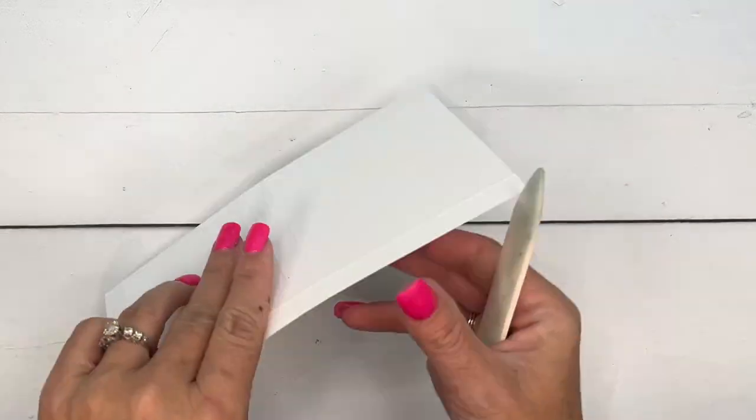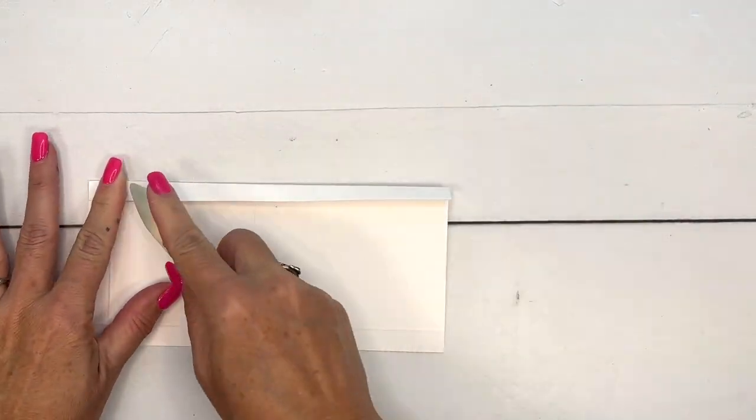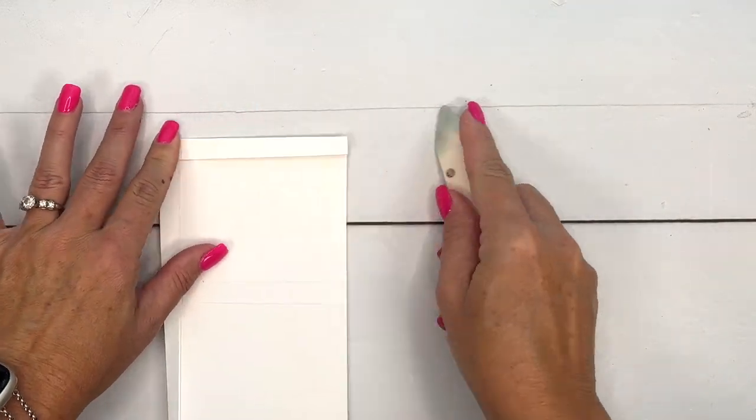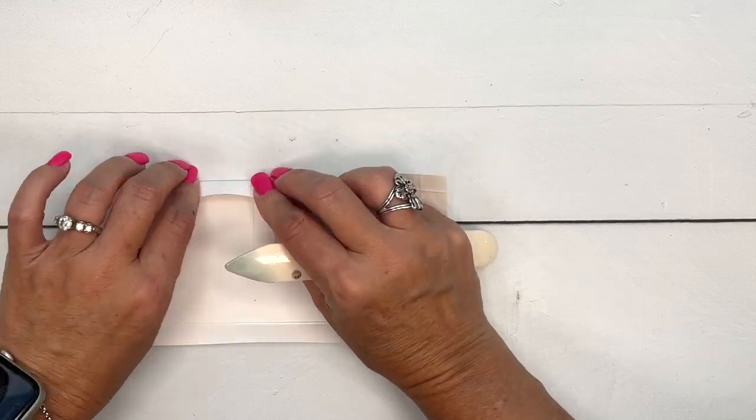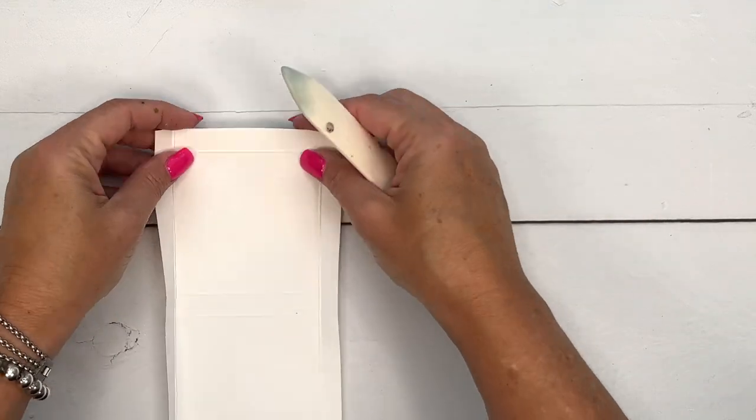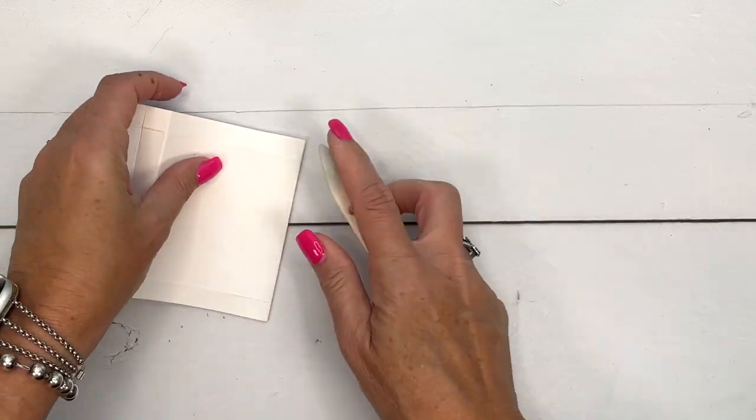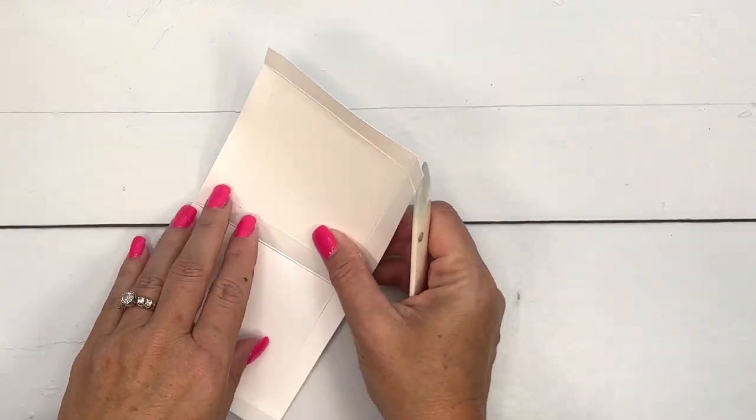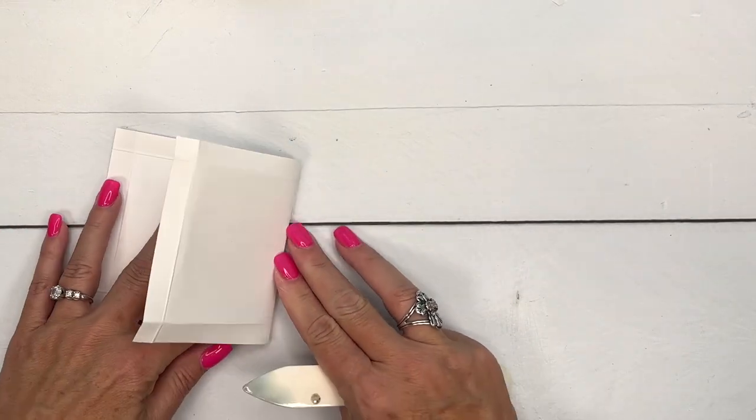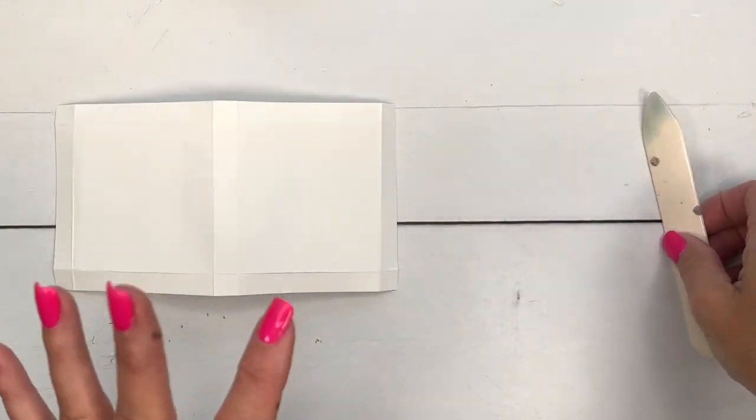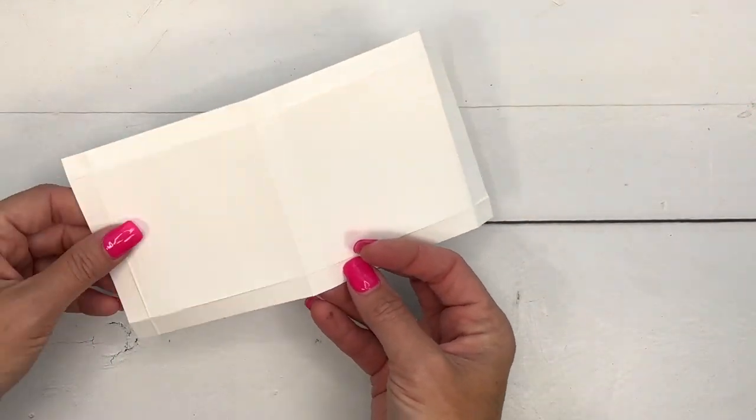Now you're going to want to grab your bone folder and burnish those lines really well. I made this pizza box to fit this candy specifically, but it could hold other things too. I had some gummy pizza slices as well, but I can't remember where I got them and I couldn't find them online. So I did find these cute little pizzas and I think they're actually cuter. Look around, see what you can find to go in your pizza box.